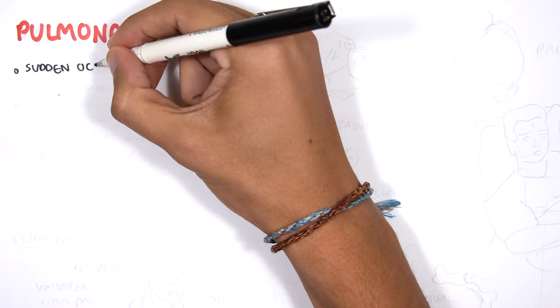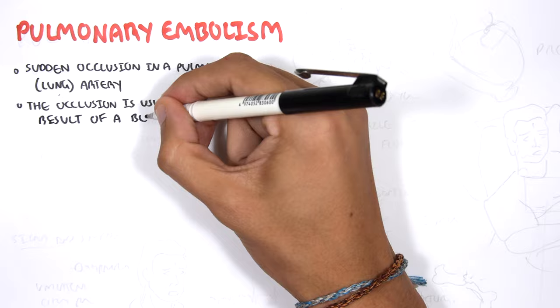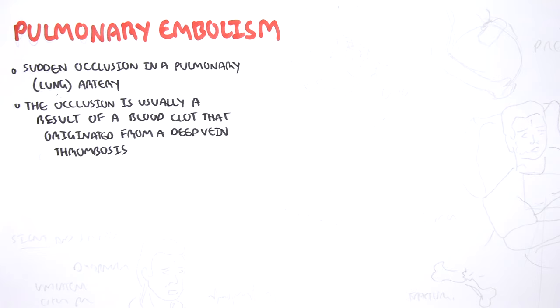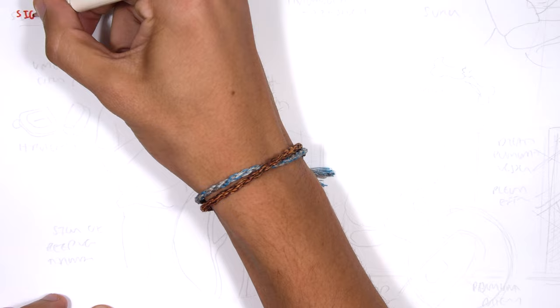Pulmonary embolism is a sudden occlusion in a pulmonary artery or lung artery. The occlusion is usually a result of a blood clot that originates from a deep vein thrombosis.